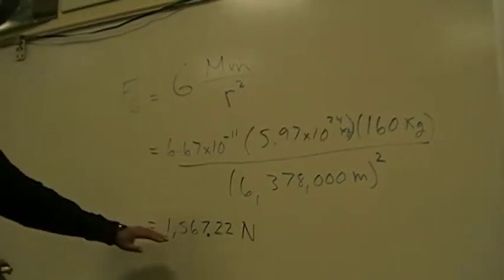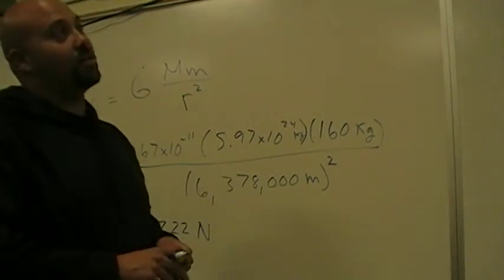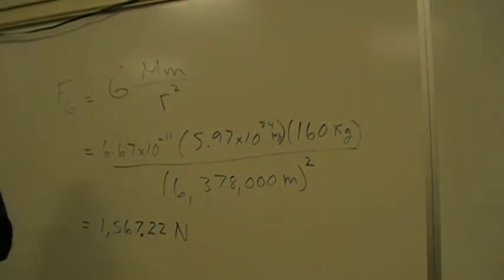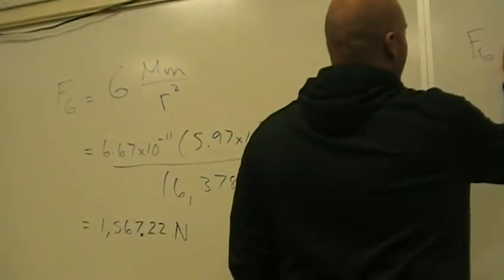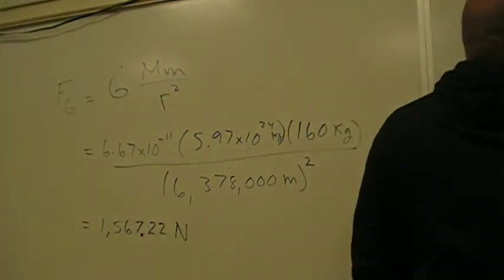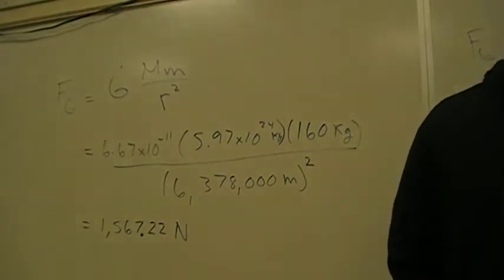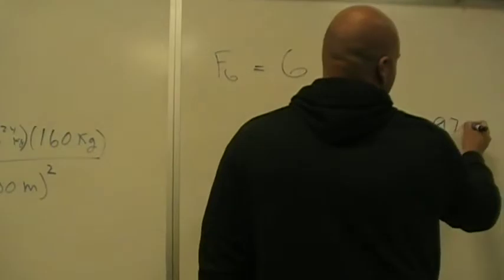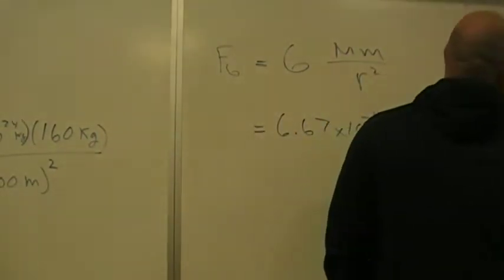So let's go ahead and look at what happens if this individual now goes on the tallest mountain of Planet X. How much is their weight going to change? It's going to decrease. So you have F_G equals G M m over r squared. 6.67 times 10 to the negative 11, 5.97 times 10 to the 24, 160.